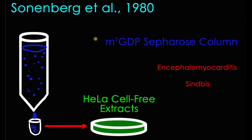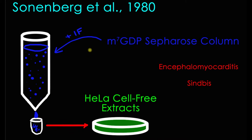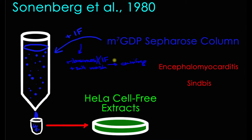The researchers who tested this were Sonnenberg et al., in 1980. What they did is they first had to purify and isolate the cap binding protein. They did this by running an M7GDP Sepharose column, to which they added initiation factors — just a whole host of them. Because initiation factors and ribosomes are both part of the initiation complex of translation, if you find ribosomes, they will most likely be bound to initiation factors.